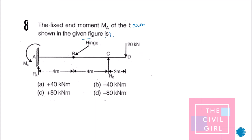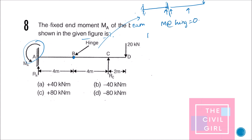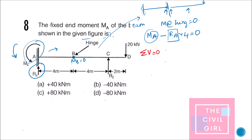Next question: the fixed-in moment MA shown in the figure is what? There is an internal hinge in the beam. At a hinge, the bending moment equals zero, so we can treat each part separately. To find MA, equate moment at B equal to zero from the left side: MA (anti-clockwise) minus RA × 4 equals zero.